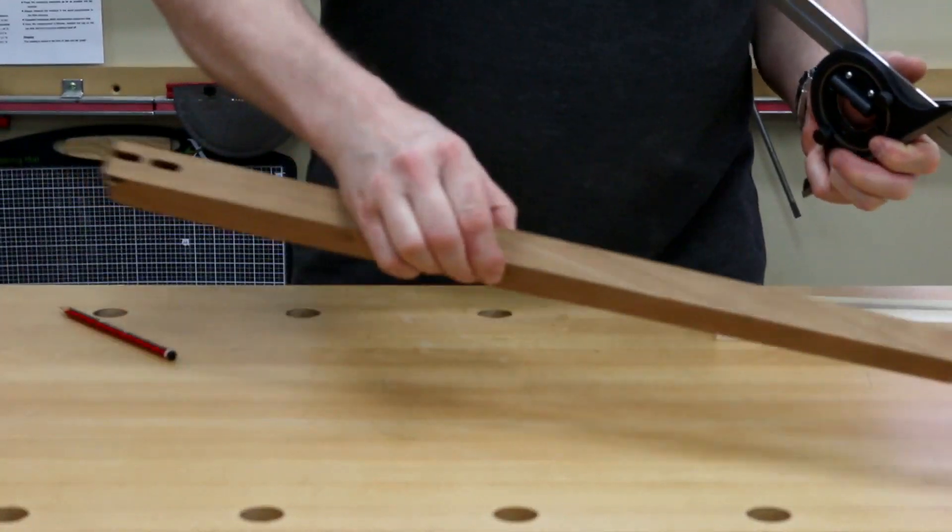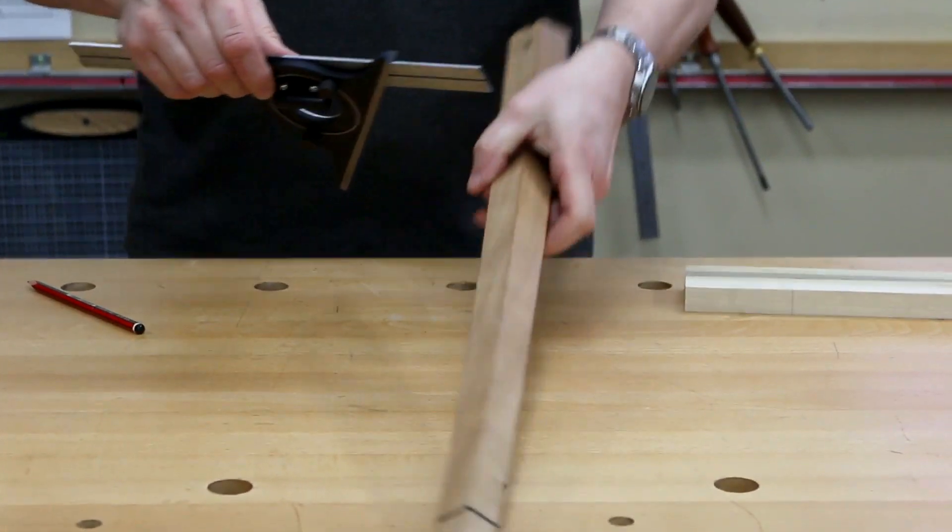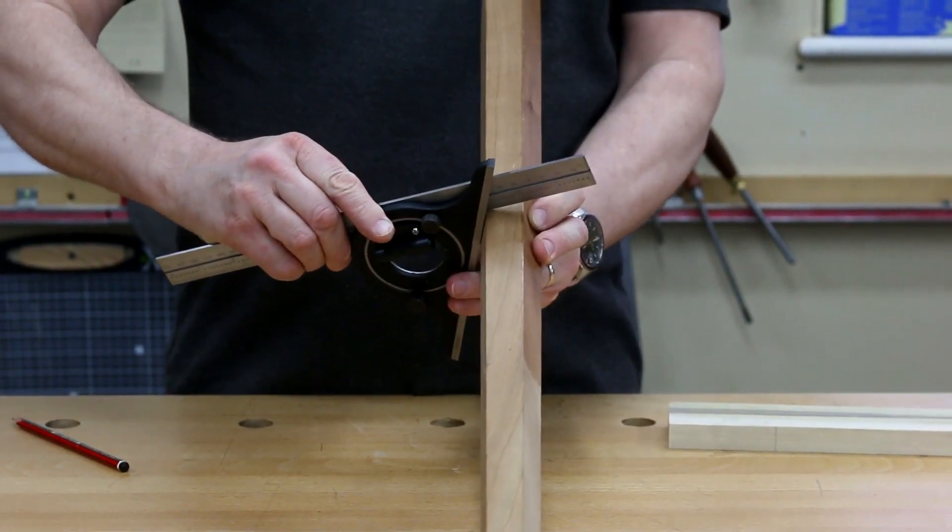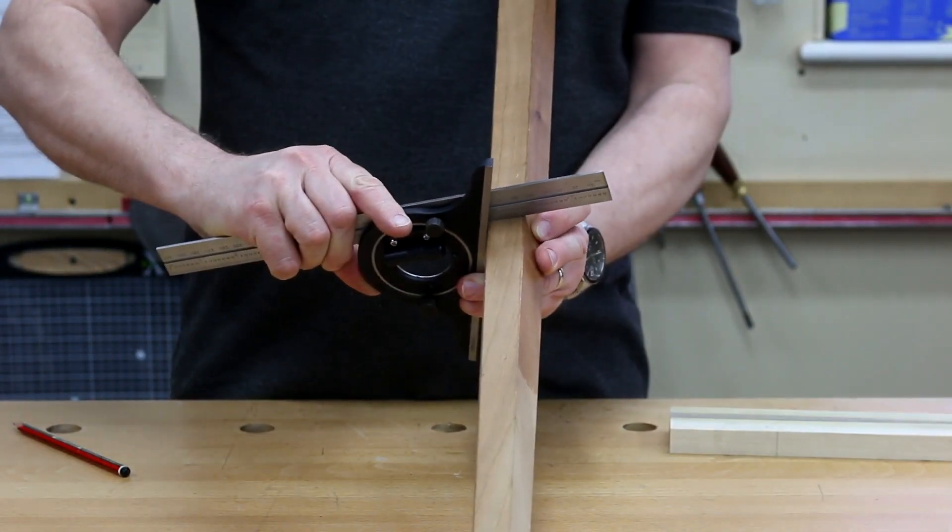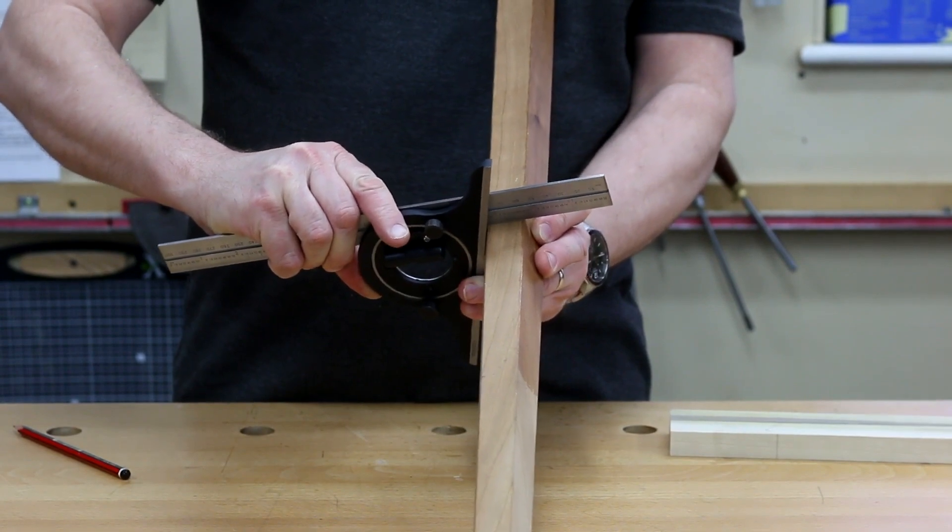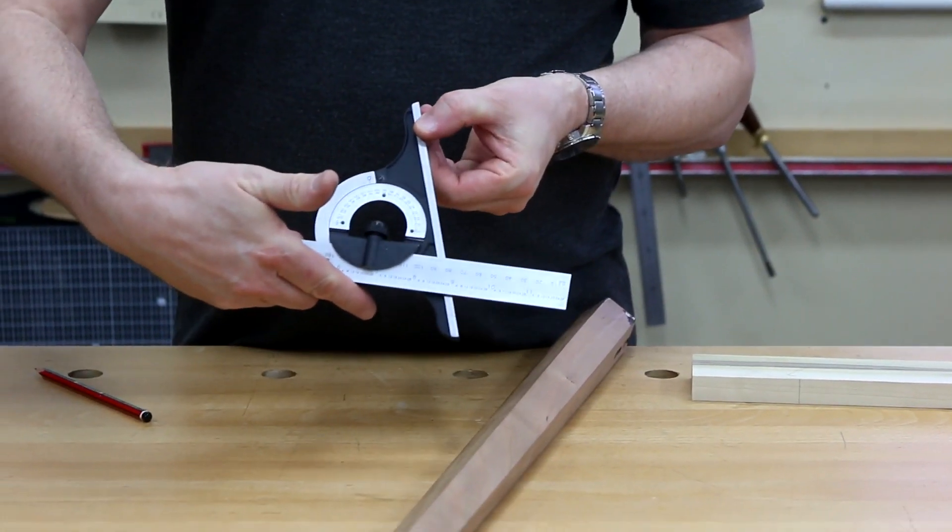Also we can use it for testing what angle some piece might already be made at. So for this pentagon leg if I can get him in here we can set up and find out what angle that is, which we've got in here.